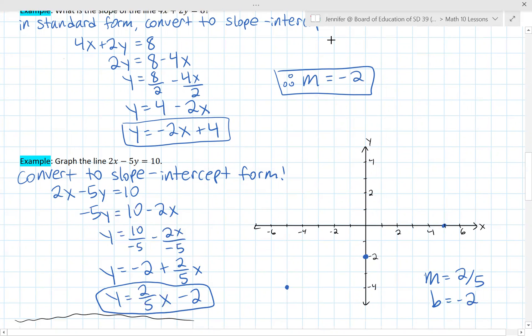And it looks something like this. So the main summary of standard form is that it's not that useful so just convert it to slope-intercept form and then you can be able to graph and analyze it a lot easier.